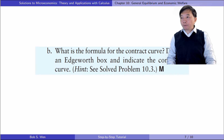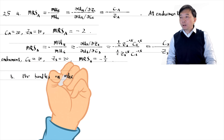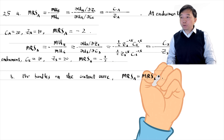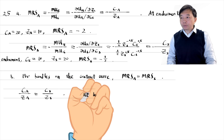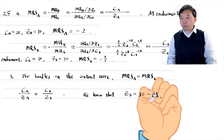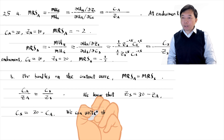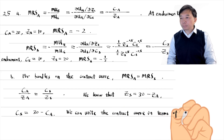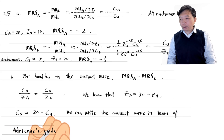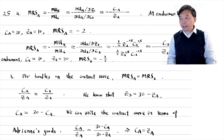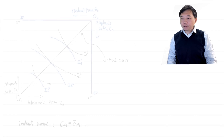In part B, what is the formula for the contract curve? Draw an Edgeworth box and indicate the contract curve. For bundles on the contract curve, the marginal rates of substitution of the two parties are identical. We know that the total units of each good are 30. We can write the contract curve in terms of one party's goods. The formula for the contract curve is a function of CA and ZA, expressed in terms of Adrian's goods. It is a straight line. Here is the Edgeworth box.